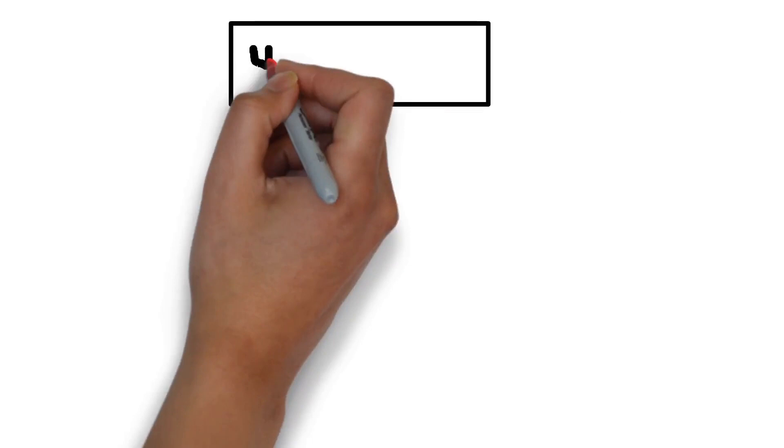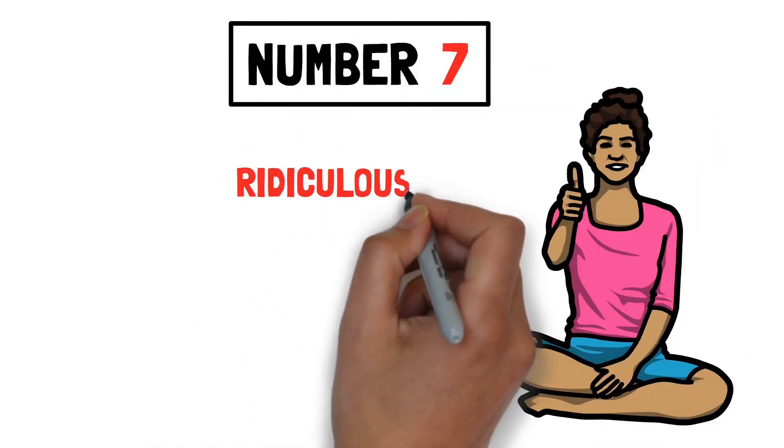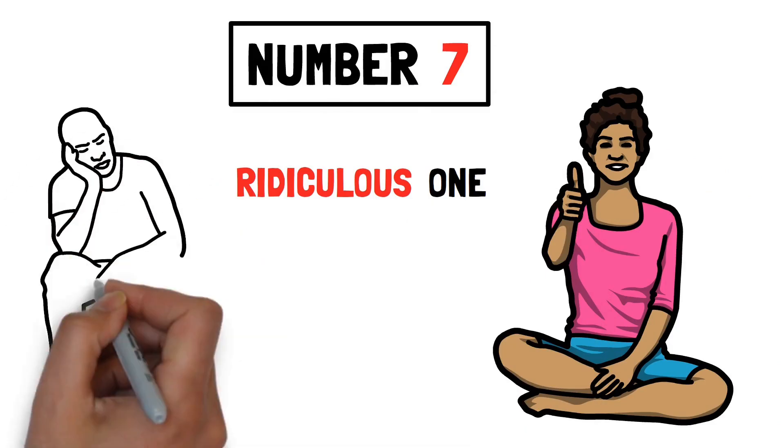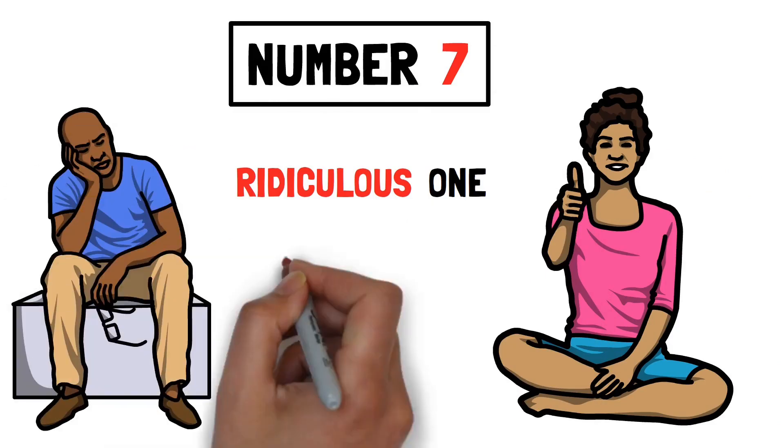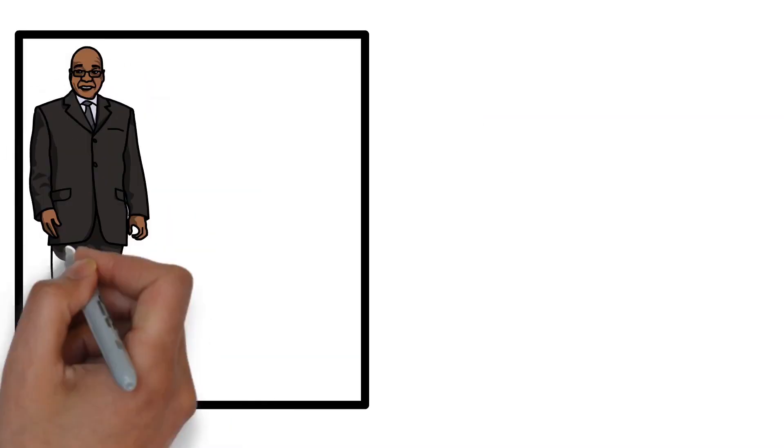Number seven. Poor people think they know everything. This is the most ridiculous one. What do people do when they face financial problems? They complain about it. There are a bazillion number of things you can blame, starting from politicians that run the country and ending with your boss.